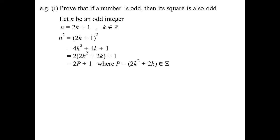I can manipulate that, and you can see I've ended up with 2 outside of (2K² plus 2K plus 1). If I let P equal 2K² plus 2K, that must be an integer — because squaring an integer gives an integer, multiplying by 2 gives an integer, and adding two integers gives an integer. So that's the form of an odd number: 2 times an integer plus 1. Hence, if N is odd, N² must also be odd.